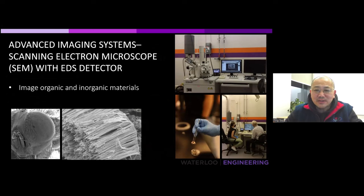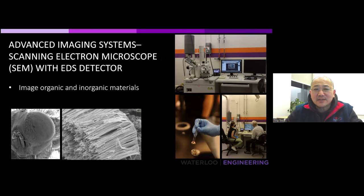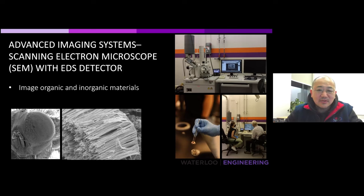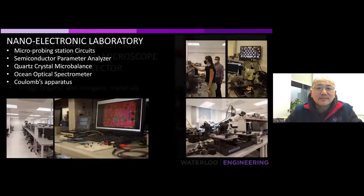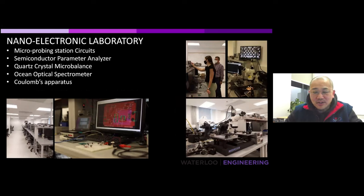Since we make very small objects in nanotechnology engineering, we need microscopes that can see features much smaller than optical microscopes can resolve. One such technique is the scanning electron microscope (SEM), which can see things smaller than a normal optical microscope. For example, we can image the eye of a fly, and students also image nanowires they make in the lab.